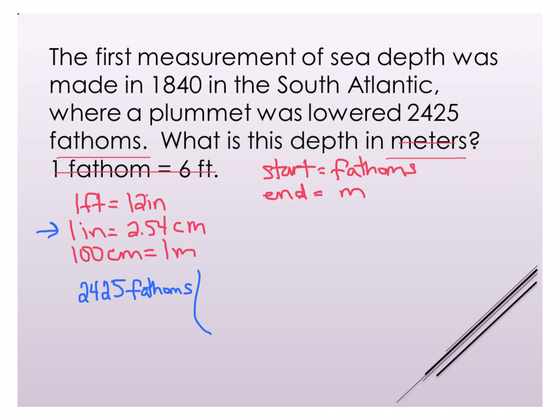Now I know no matter what I do no matter what the rest of the problem is going to be I know I have to have fathoms on the bottom because that has to cancel out and I know that one fathom equals six feet that was a relationship I was given. So now I can say fathoms cancels with fathoms.